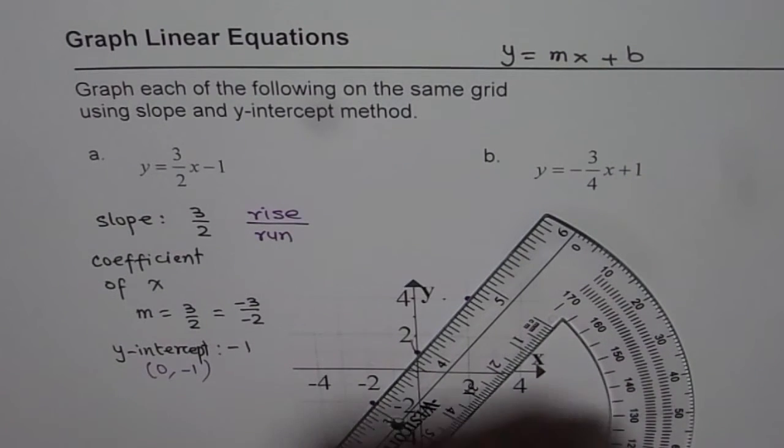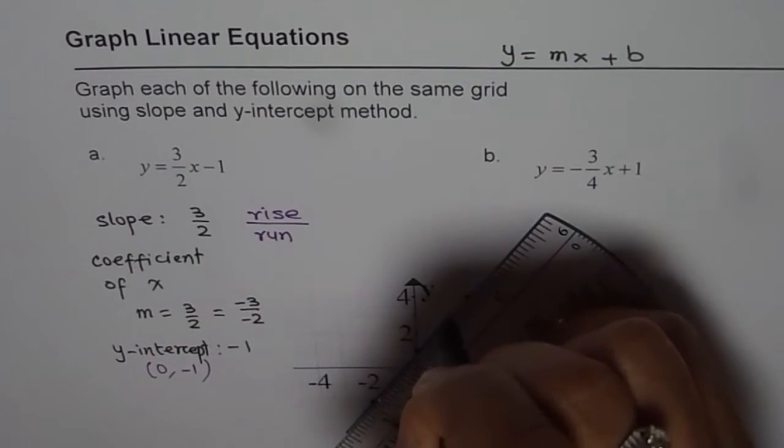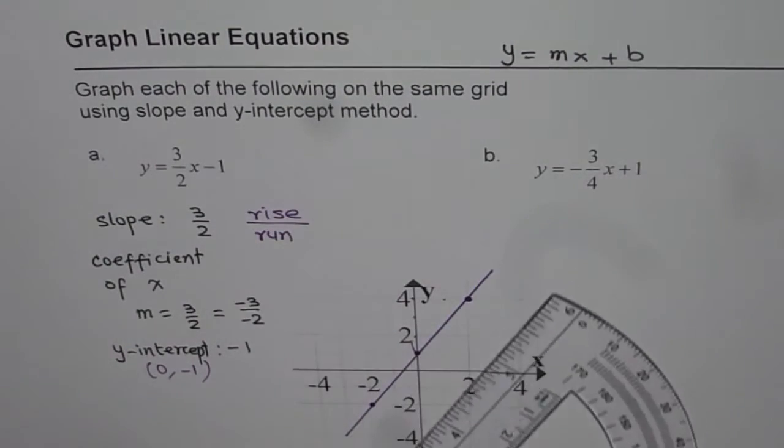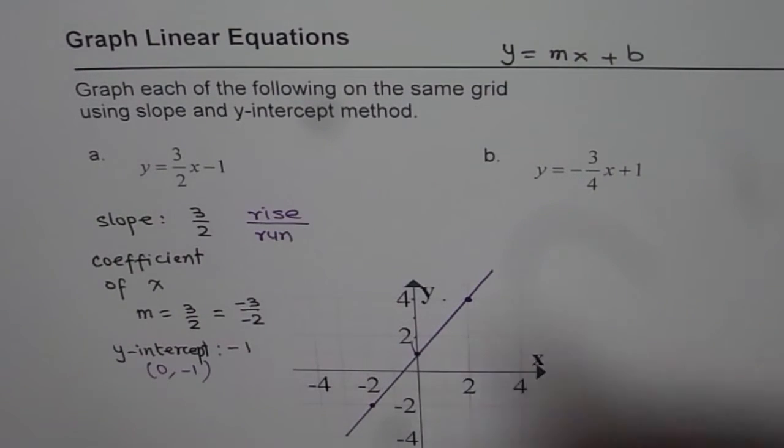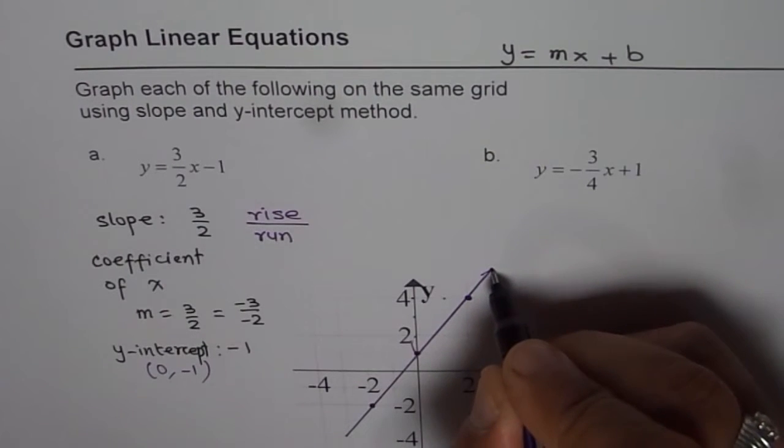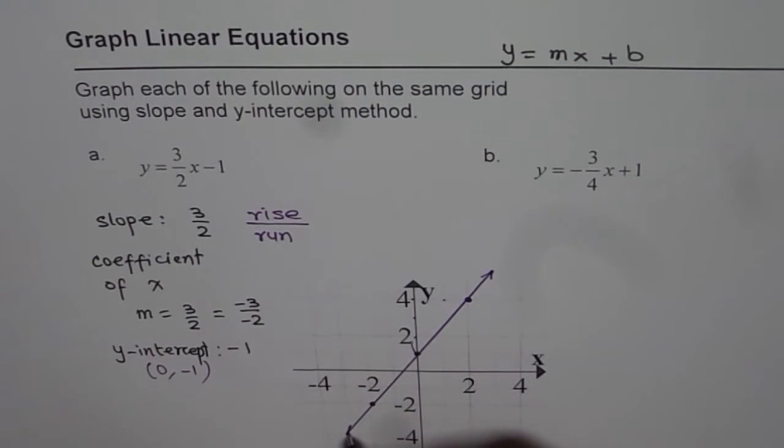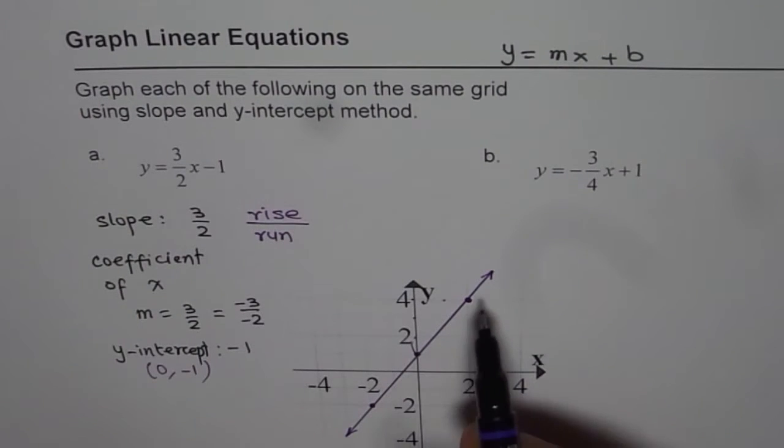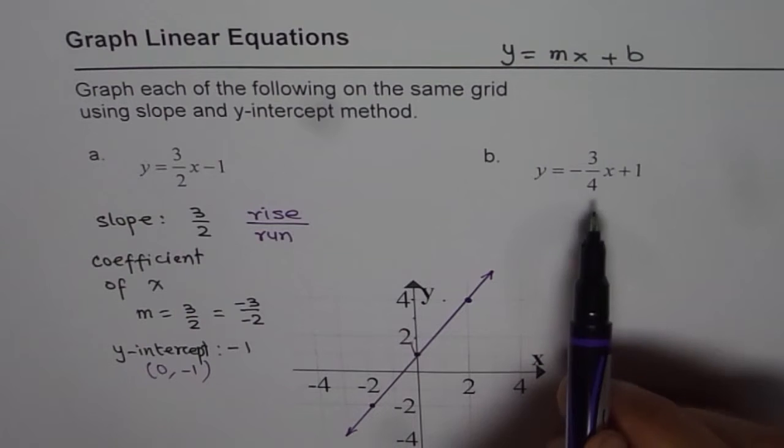Align these points and join them with a straight line. Don't forget to write or mark arrows at the end. This indicates that line extends forever. And a solid line connecting them indicates infinite number of points in between. Follow this strategy and sketch graph of the linear equation.